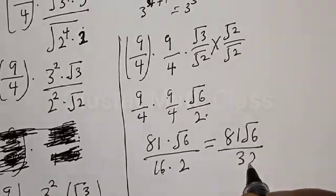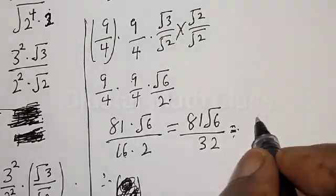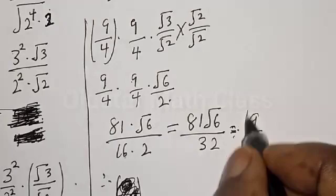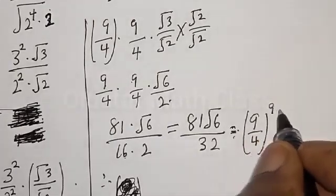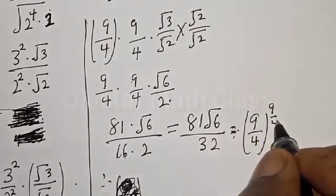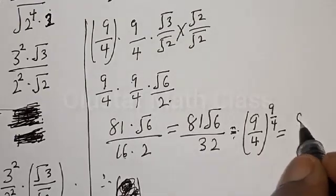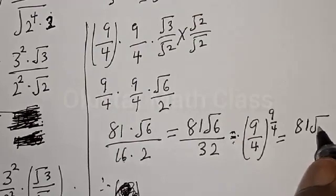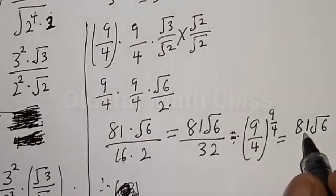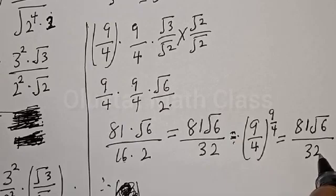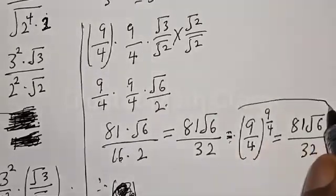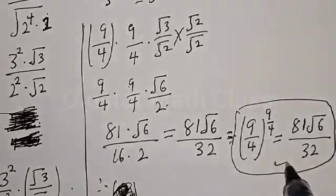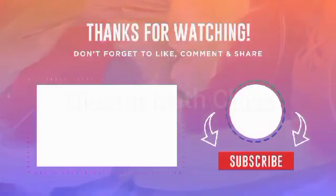Our final answer is: 9 divided by 4, raised to the power 9 divided by 4, equals 81 root 6 over 32. If you have enjoyed the class, please don't forget to like, share, comment, and subscribe. Thank you.